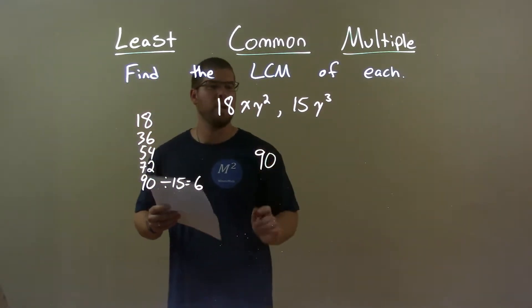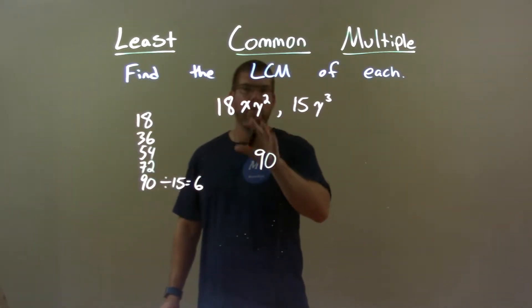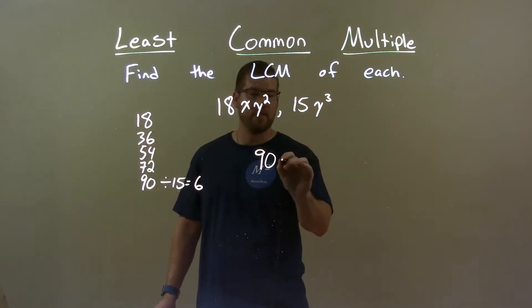So 90 is going to be the number. Now to deal with the variables - with our variables, make sure we encompass everything. We have one x here, no x here, but we have to have an x.